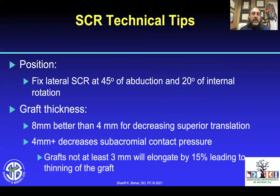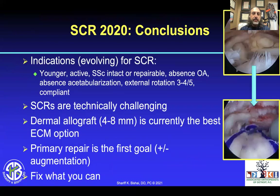SCR technical tips: position the SCR at about 45 degrees of abduction and 20 degrees of internal rotation. Graft thickness — the bigger the better; 8 millimeters is better than 4. A 4-millimeter-plus graft decreases subacromial contact pressure, but grafts of about 3 millimeters or less will elongate, leading to thinning and loss of the depressive effect of the SCR. Overall conclusions as of 2020 to 2021: ideal candidates are younger, more active patients with intact or repairable subscapularis, absence of osteoarthritis, absence of acetabularization, good external rotation strength of at least 3 to 5, and who will be compliant. Primary repairs are the first goal, with augmentation as previously discussed — and sometimes you can fix something and still do the SCR.